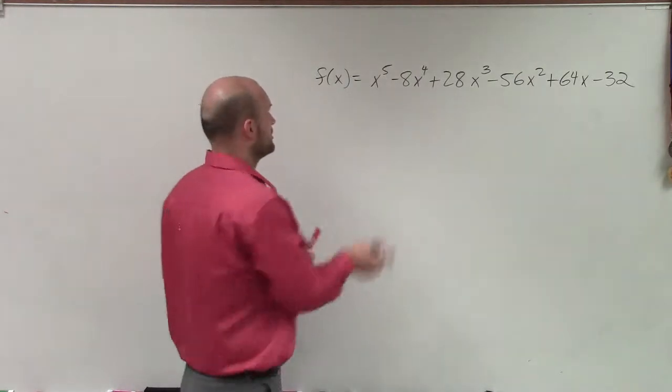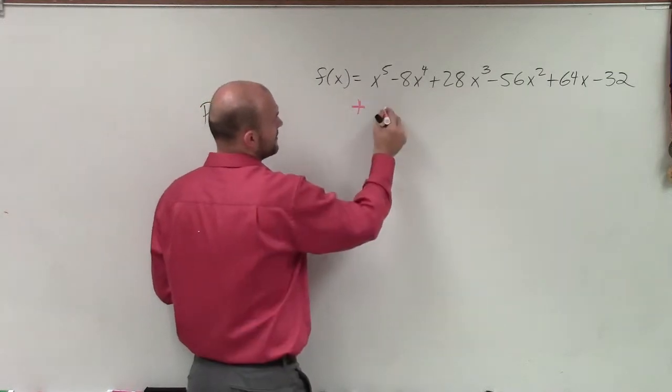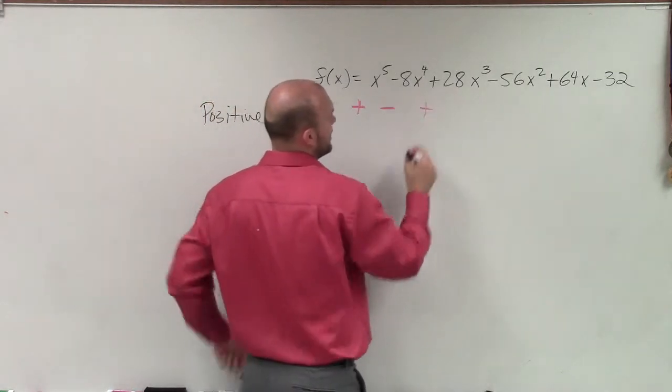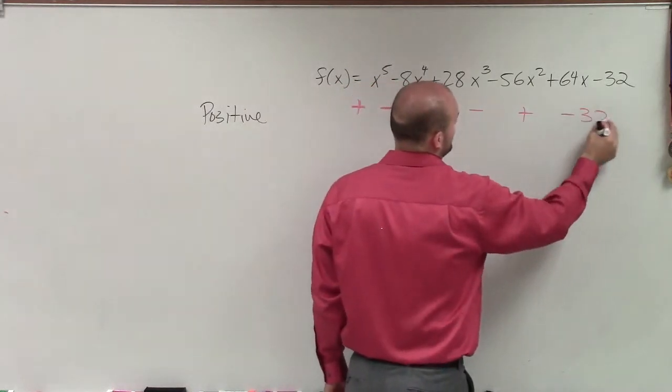So this is a positive x to the fifth. So I'll bring down a positive. Then I have a negative. Then I have a positive 28, minus 56, positive 64, and a negative 32.